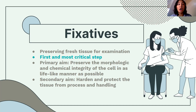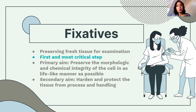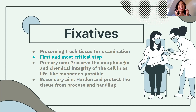The reagents we use for fixation are fixatives. We need to preserve fresh tissue for examination. Our primary aim is to preserve the morphologic and chemical integrity of the cell — to be as lifelike as possible. The secondary aim is to harden and protect the tissue from processing and handling.